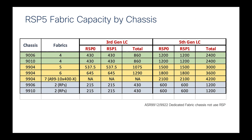The last slide is provided as a reference, summarizing RSP5 connections to either third generation or fifth generation line cards, and showing how much forwarding capacity can be provided with single or redundant RSPs. Note that 9906 and 9910 treat the RSP just like a normal SFC. That's all the content — hopefully it helps you identify what kind of switching fabric you need based on the RSP. Thank you for watching.